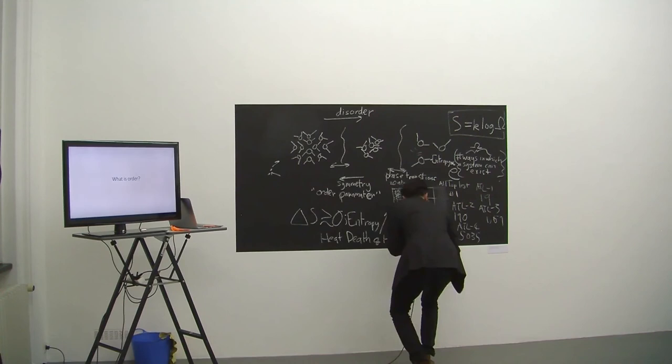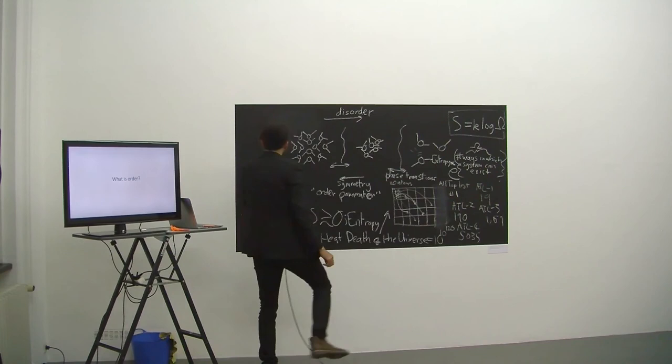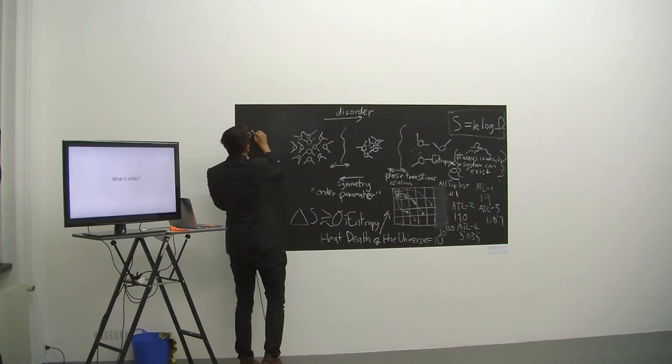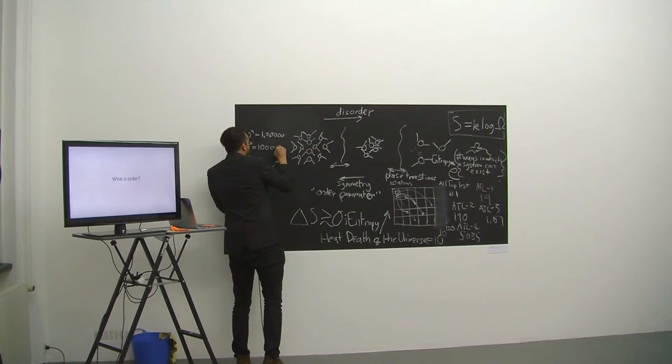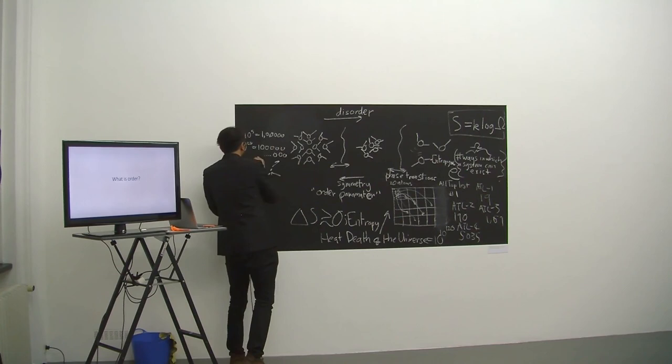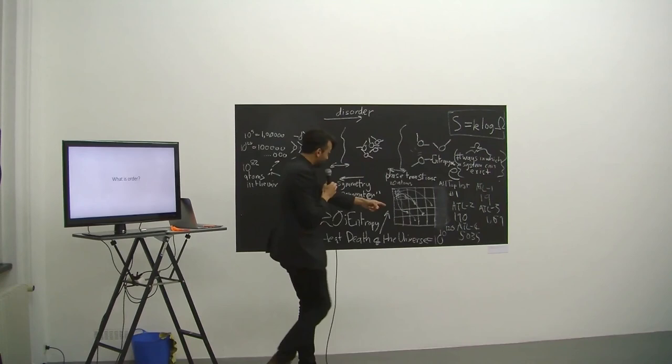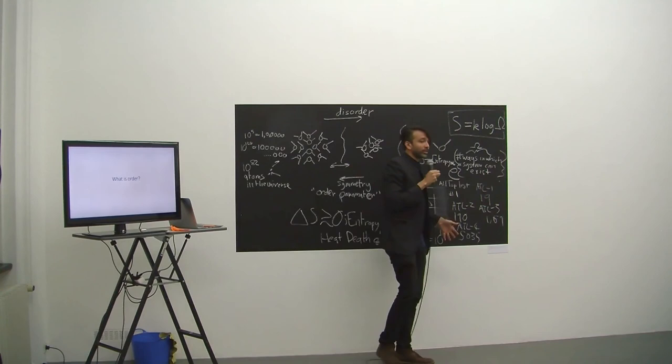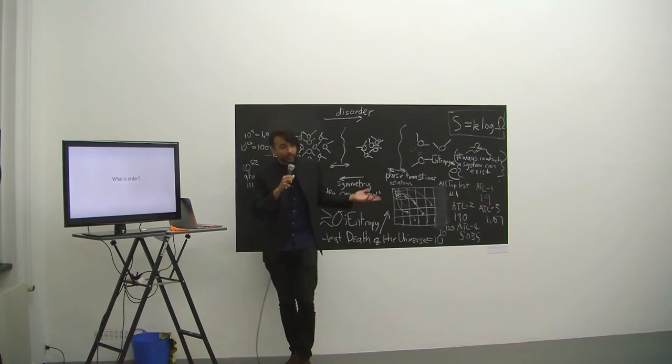Heat death of the universe happens when the universe is - you ready for this? - 10 to the 10 to the 120 years old. So now I'm going to unpack that number for you. 10 to the 120 - well, 10 to anything, let's say 5, is 1 followed by 5 zeros. So 10 to the 120 is 1 followed by 120 zeros. There are 10 to the 82 atoms in the universe. That's it. I can't even write this number down. If I put a zero on every atom of the universe, I could not even write this number down, but I can express it abstractly in that form. So when the universe becomes this old, nothing else will happen. We reach the state of maximum disorder. Time's arrow starts going forward, we reach time invariance again, and then most likely some quantum fluctuation will start the universe again in another big bang.